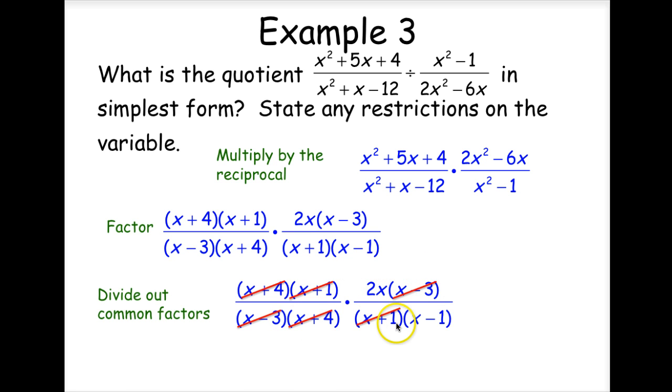So you see what it leaves? 2x over x minus 1. And the restrictions are a positive 3, negative 4, negative 1, positive 1.